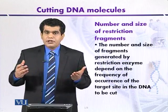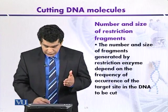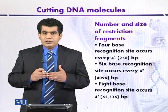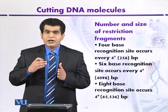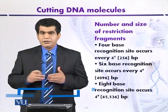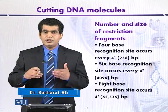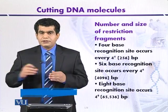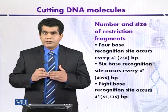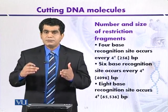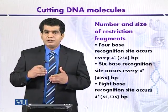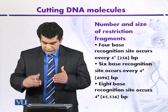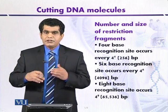If GC content is 50%, then in the case of a four base pair sequence, there is a possibility that it will be present after every 256 base pairs (4 raised to the power 4). So after every 256 base pairs, this sequence will be repeated. In the case where the target sequence is composed of six base pairs, it will be present after every 4096 base pairs.